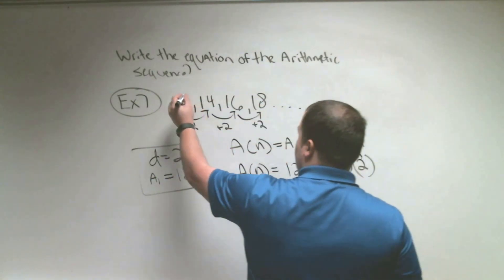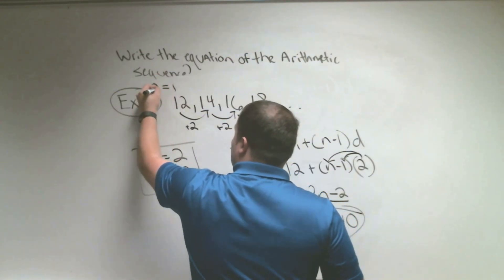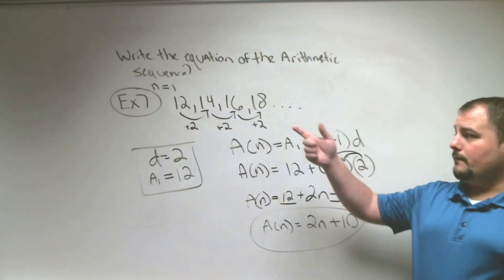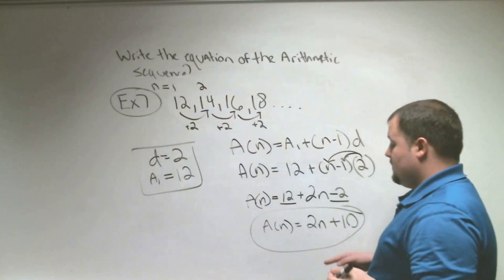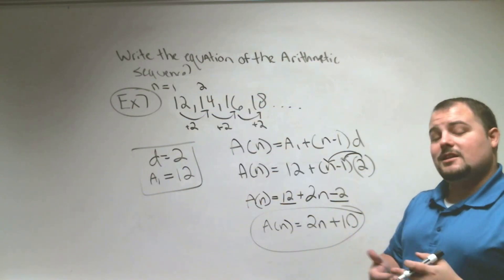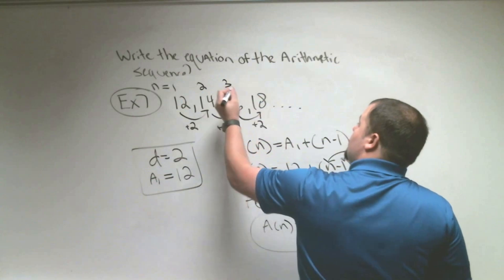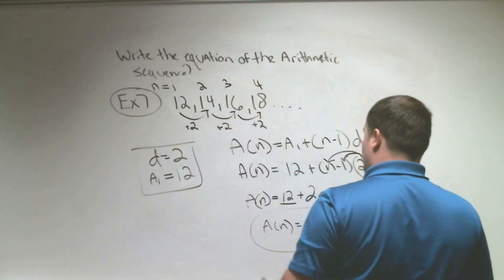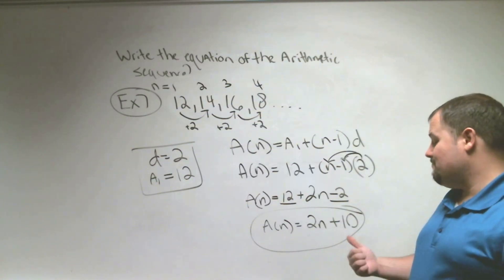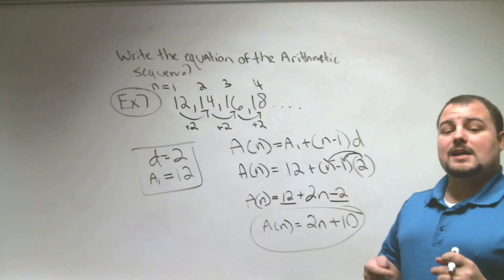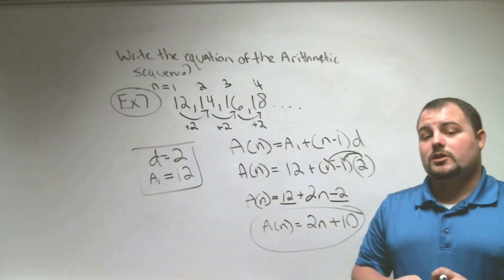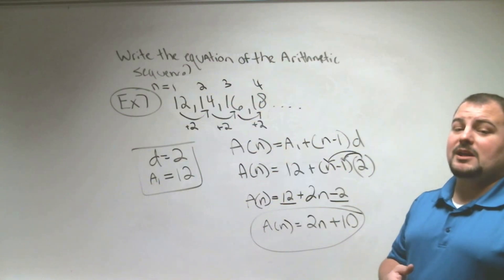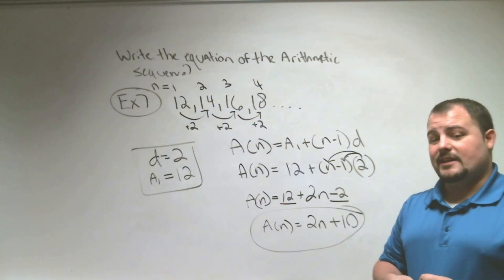Let's check. For N equals 1: 2 times 1 is 2, plus 10 is 12. First number is 12. For N equals 2: 2 times 2 is 4, plus 10 is 14. For N equals 3: 2 times 3 is 6, plus 10 is 16. For N equals 4: 2 times 4 is 8, plus 10 is 18. We've established this equation works for the pattern. We can figure out any term — the 50th, 100th, or 200th — without continuing the pattern manually.